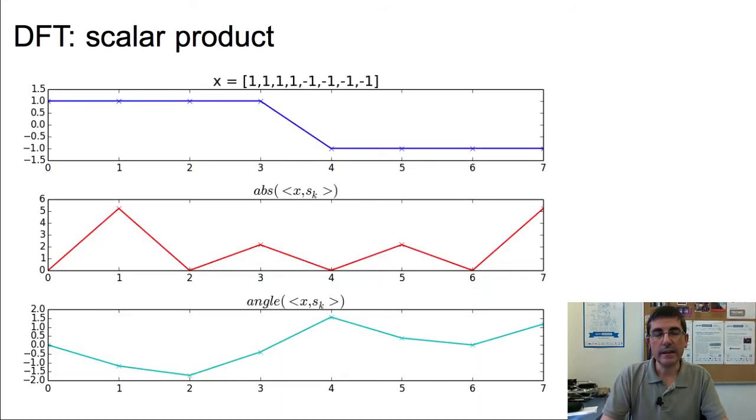Let's do that with a bigger signal. So this is an example of the scalar operation of a simple signal that has all ones. It has eight samples. The first four are ones, and the last four are minus ones. So this would be like a rectangular kind of signal. If we compute the DFT, or the scalar product, between this X signal and the eight complex sine waves that we had seen in the previous slides, the result will be this one.